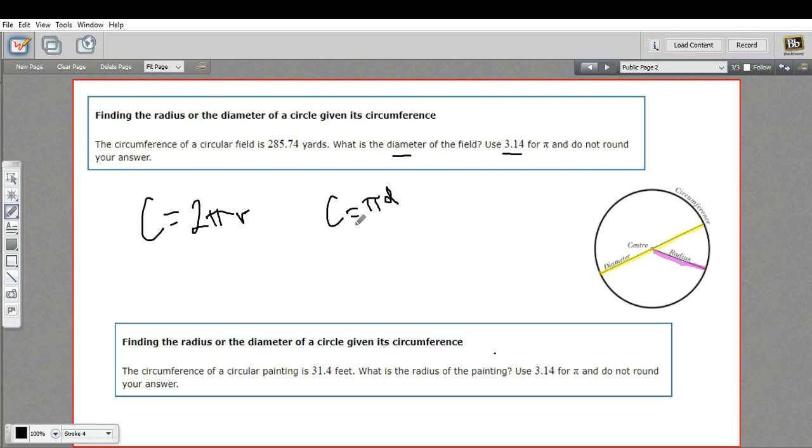So let's go ahead. We're trying to find diameter. Let's use this formula. The circumference is 285.74, so I'm going to put it in right there: 285.74. It says to use 3.14 for π, so I'm going to put that in there. So this is 3.14. And then I've got my D for diameter that we're going to solve for.